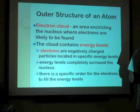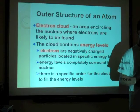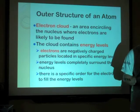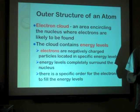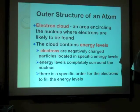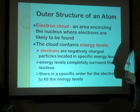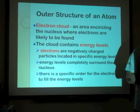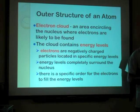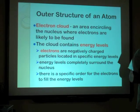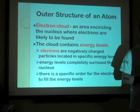The cloud contains energy levels, which we'll possibly talk about at the end of class today, but definitely next week. Electrons are negatively charged — there's no easy way to remember that because E and negative don't have the same letter, so you just have to memorize it. There are negative particles located in specific energy levels that completely surround the nucleus, and there is a specific order for the electrons to fill the energy levels.